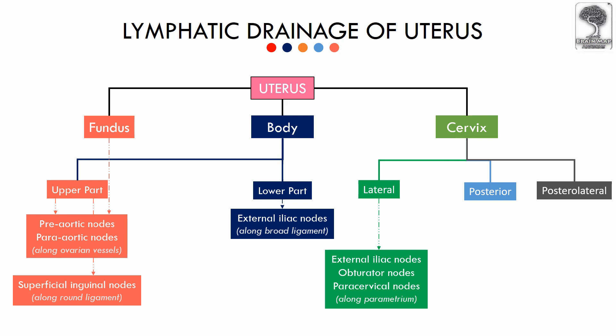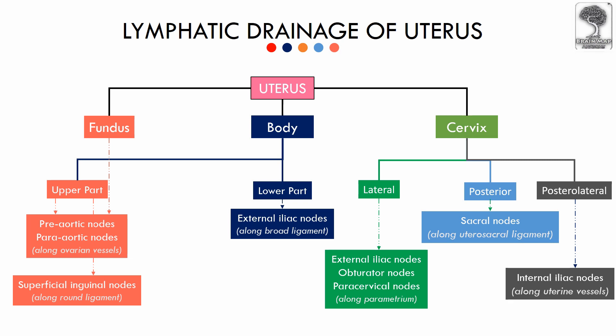From the posterior aspect of the cervix, the lymphatic drainage occurs to the sacral lymph nodes along the uterosacral ligaments. The posterolateral aspect of the cervix drains along the uterine vessels into the internal iliac lymph nodes.